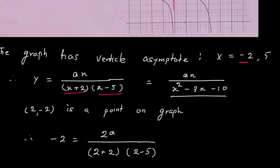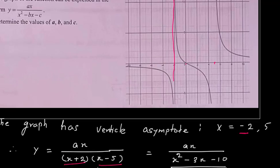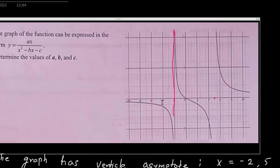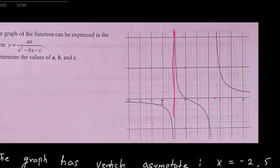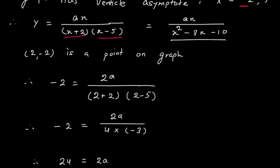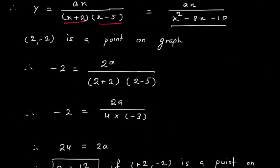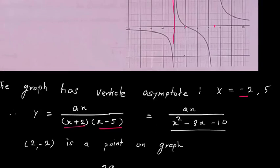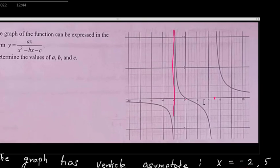From x² - 3x - 10, this indicates that b = 3 and c = 10. So I've got the values of b and c. Next, I want to find the value of a.